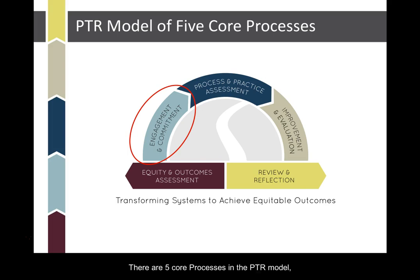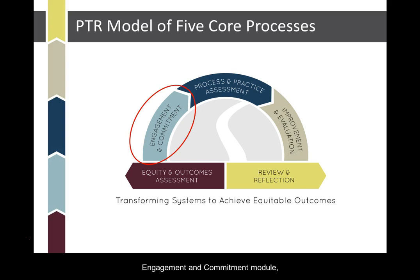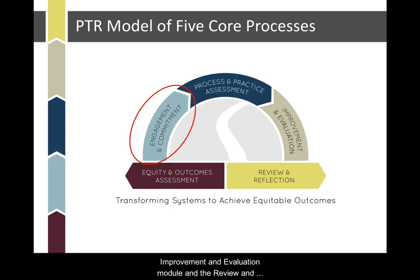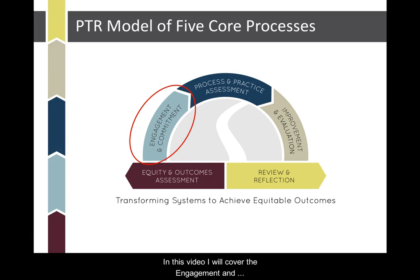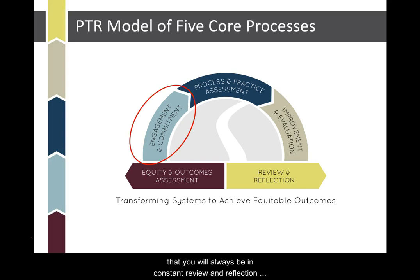There are five core processes in the PTR model: the equity and outcomes assessment, engagement and commitment module, process and practice assessment, improvement and evaluation module, and the review and reflection module. In this video, I will cover the engagement and commitment module. It is also important to note that you will always be in a constant review and reflection state throughout each core process in the PTR model.